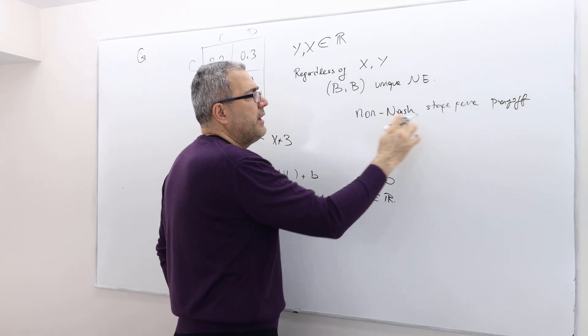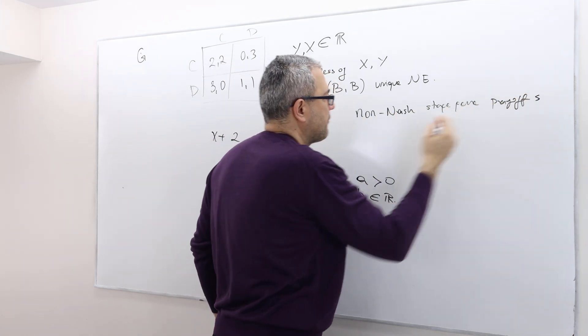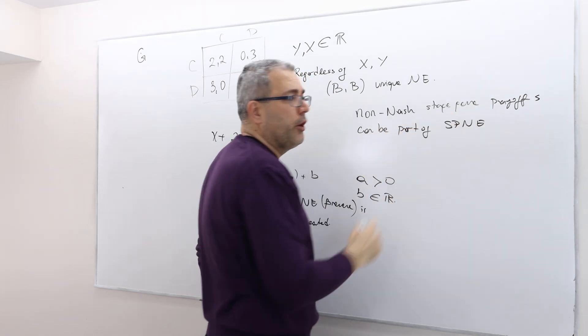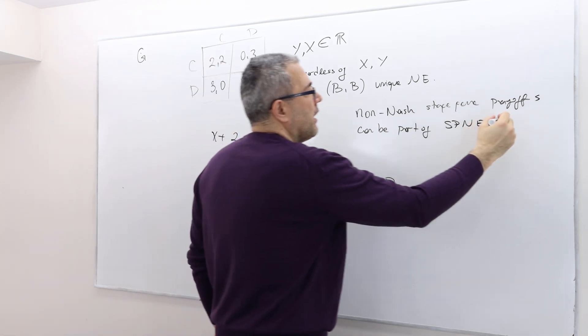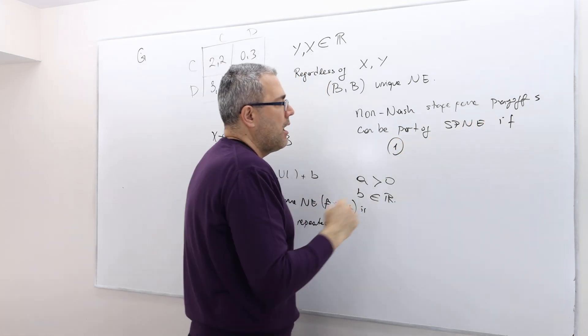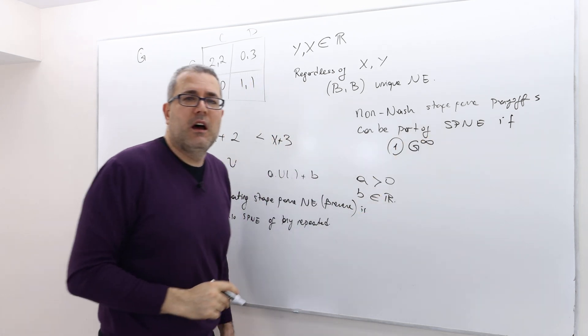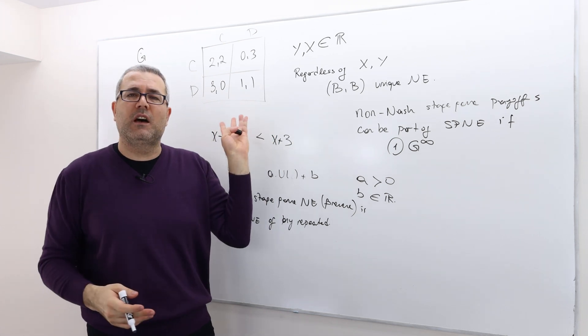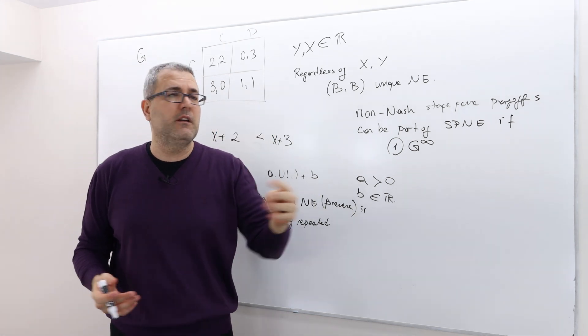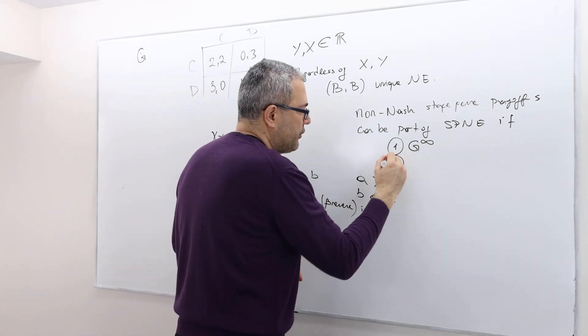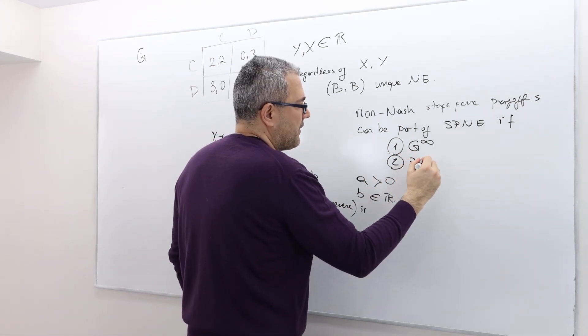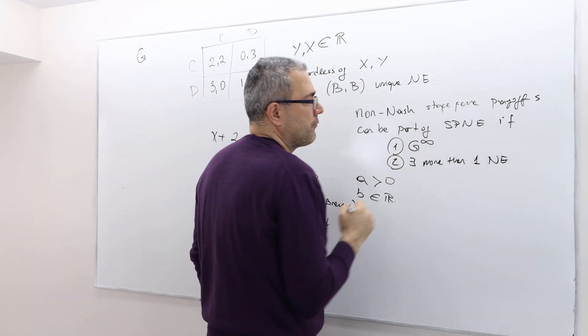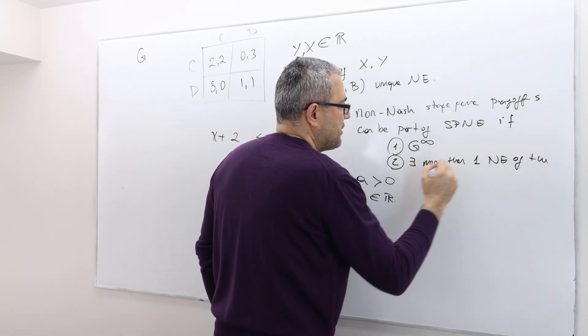In a repeated game, non-Nash stage game payoffs can be part of subgame perfect Nash equilibrium if: (1) the game is repeated indefinitely, meaning infinite horizon where we play this Prisoner's Dilemma game forever, or (2) there exists more than one Nash equilibrium of the stage game.